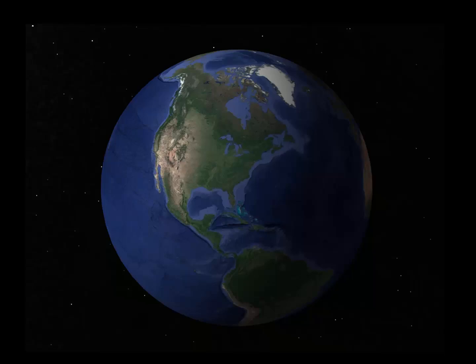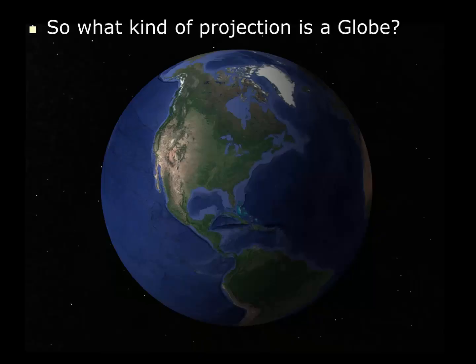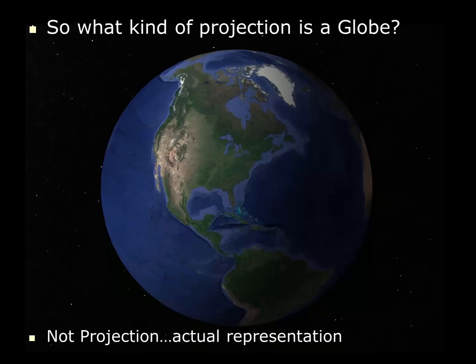But that gets us back to the question: when we look at the globe, what sort of projection is a globe? It can't be a three-dimensional projection because that violates our definition. A globe, in fact, is not a projection at all — it's an actual representation or a model of the real earth. So projections are very useful for making flat maps from the curved surface of the earth.